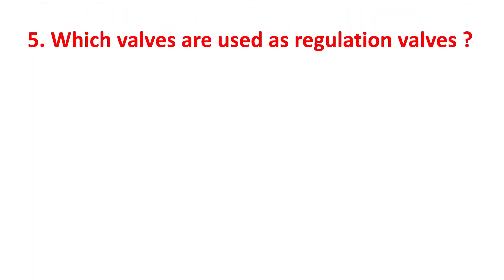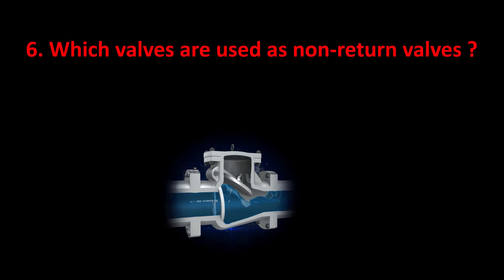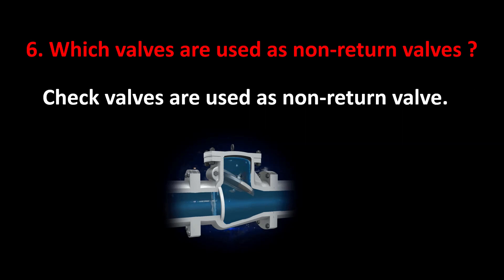Which valves are used as regulation valves? Valves used for regulation purposes are globe valve, needle valve, piston valve, diaphragm valve, butterfly valve, and pinch valve. Which valves are used as non-return valves? Check valves are used as non-return valves.